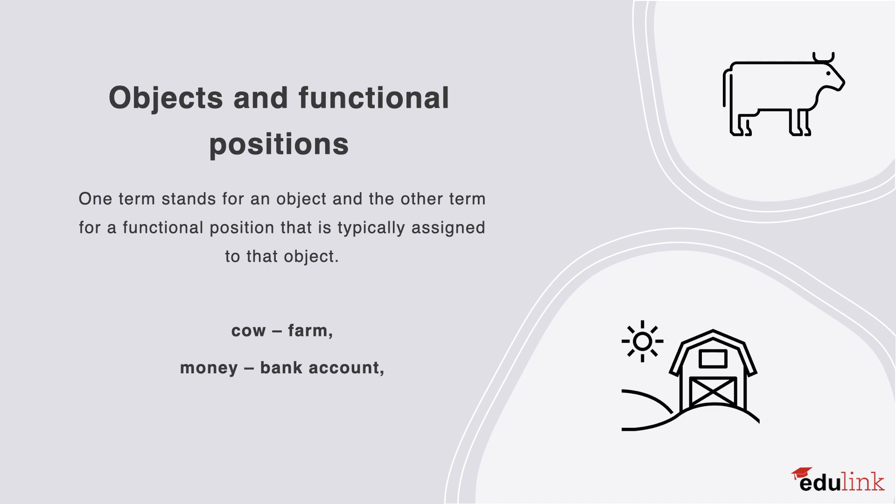Money has a functional position in a bank account, in that there, it is saved and stored. And likewise, a painting has a functional position in a museum, where it can be preserved and admired by the public.